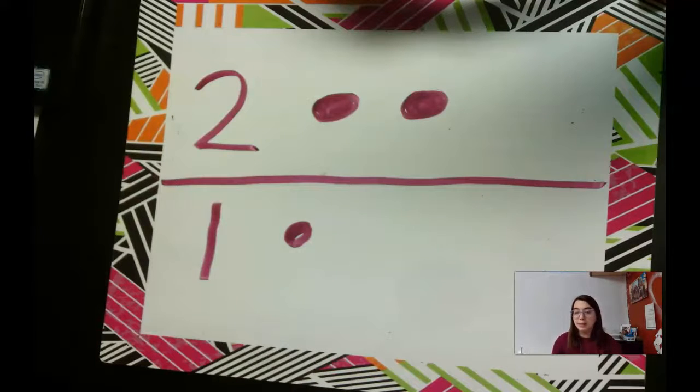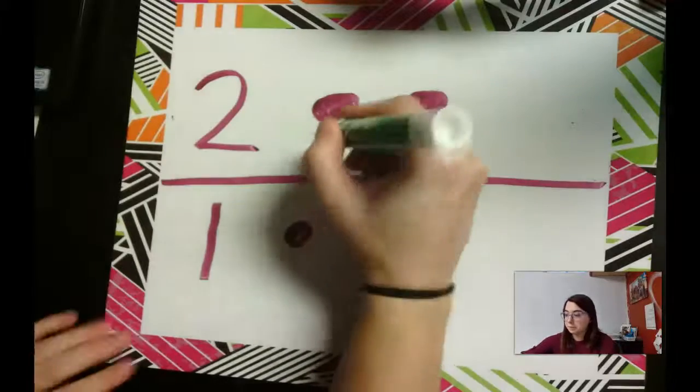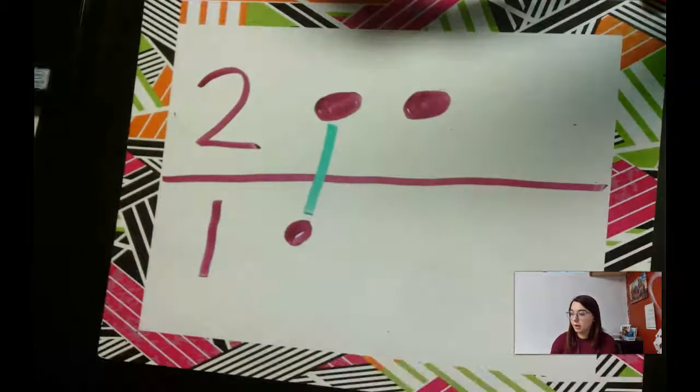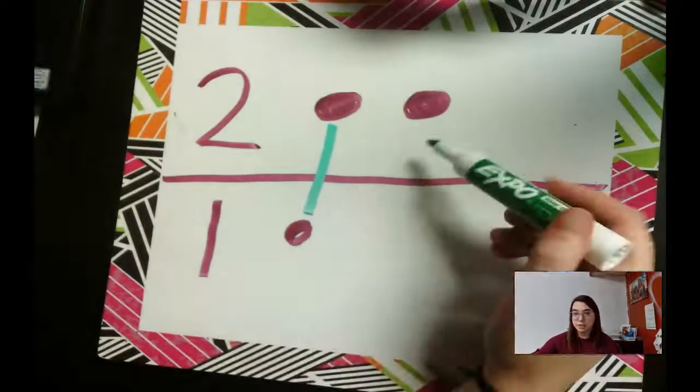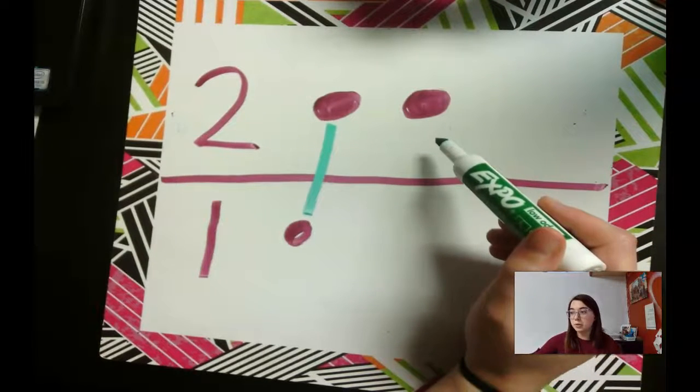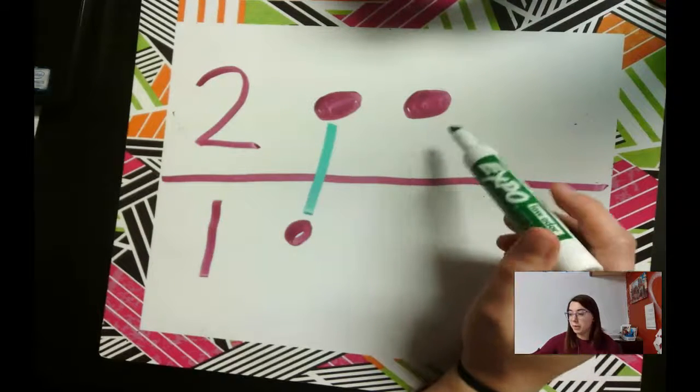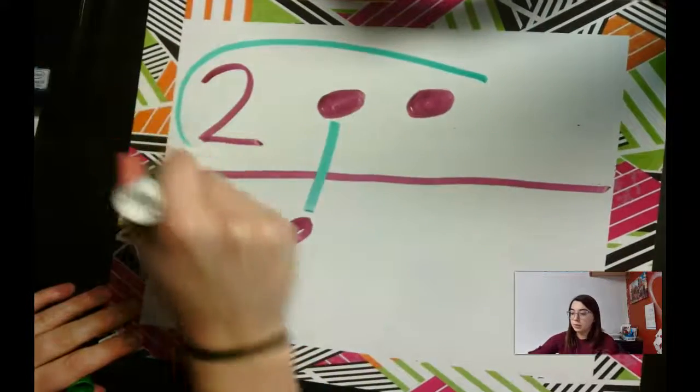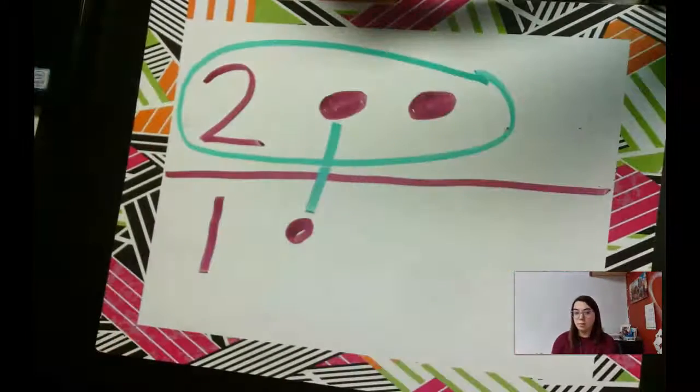Or I could make partners to see which has more. So these ones can be partners. And then, oh, is there a partner for this one? No. And remember the group that has some leftover without partners is the one that's bigger. So two is more than one.